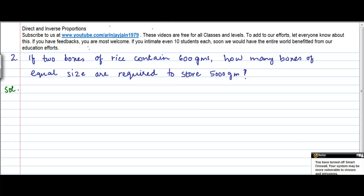So we are at a situation wherein we are told that 600 grams of rice require two boxes. So how much will 5000 grams require?